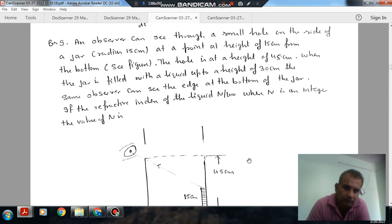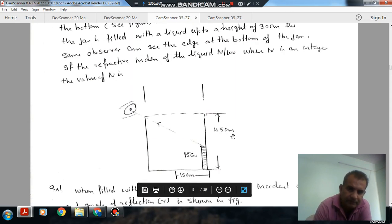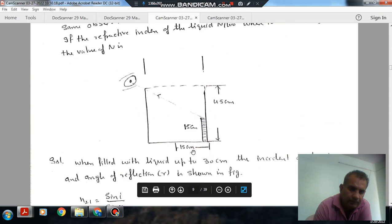If the refractive index of the liquid n by 100 is 100 by 100, where n is an integer, the value of n is what we need to find.